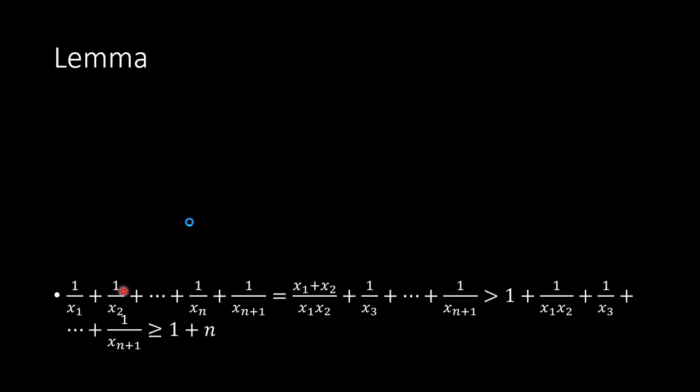Now we can see 1 over x1, 1 over x2, 1 over x3, and so on. Consider this, and then we combine the first two numbers. It becomes x1 times x2 over x1 plus x2 for the numerator.